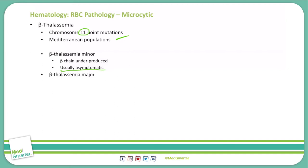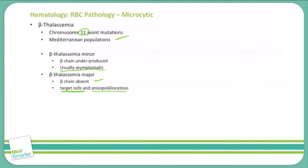In beta thalassemia major, the beta chain is completely absent. On a peripheral smear, you will see target cells and anisopolkilocytosis. Target cells are also seen in liver disease, post-splenectomy, other thalassemias, and hemoglobin C. Anisopolkilocytosis refers to a variance in shape and size of red blood cells, and this variance will require blood transfusions to correct.